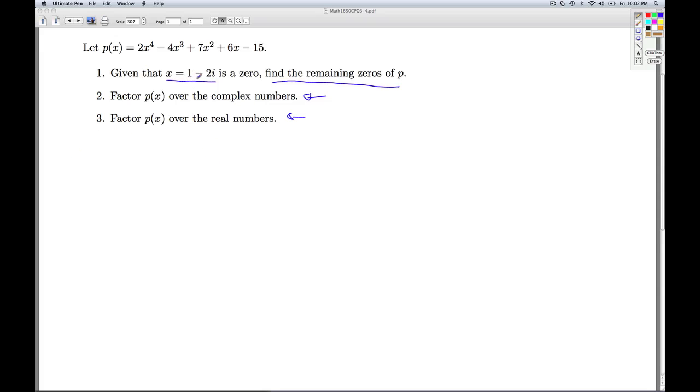So how do we do this? Well, if x = 1 - 2i is a zero, then that means x minus it has to be a factor. That means when I synthetically divide 1 - 2i into this polynomial, I should get a remainder of zero.